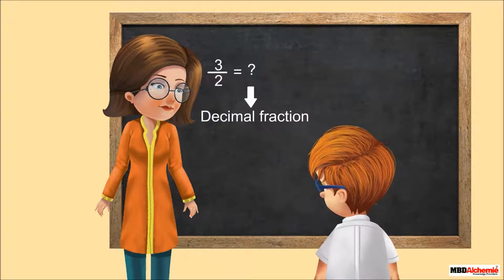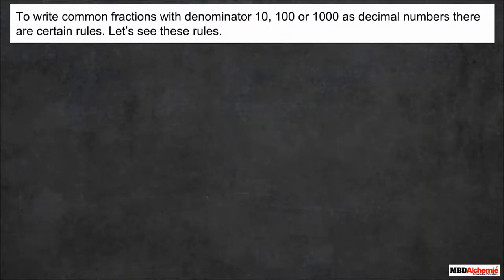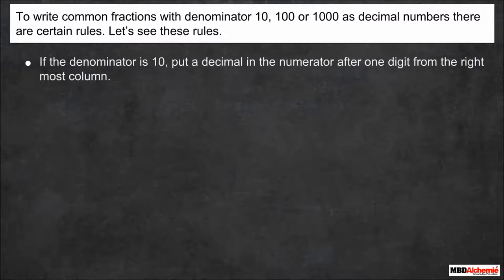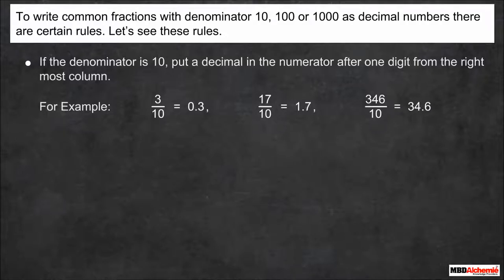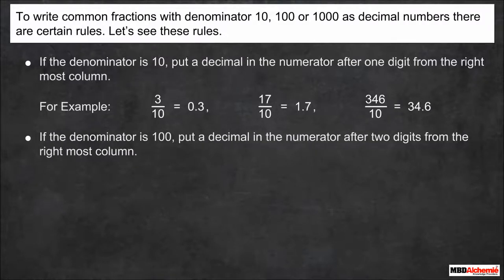Sure, Neil. To write common fractions with denominator 10, 100, or 1000 as decimal numbers, there are certain rules. If the denominator is 10, put a decimal in the numerator after one digit from the rightmost column. For example, 3/10 = 0.3, 17/10 = 1.7, and 346/10 = 34.6.